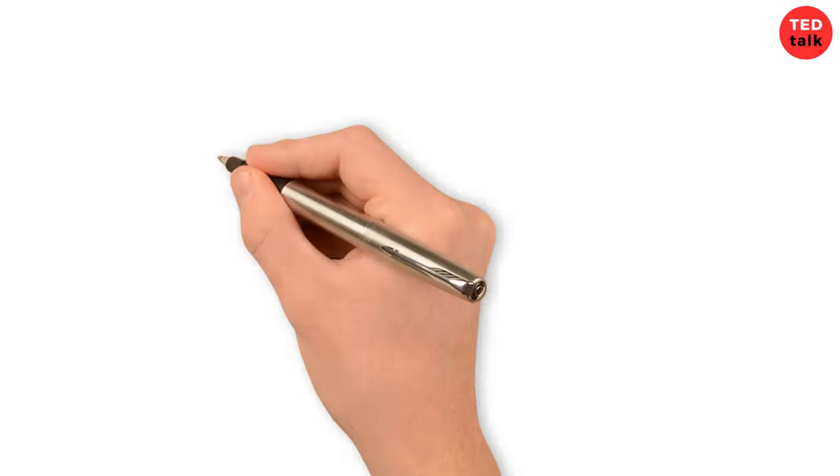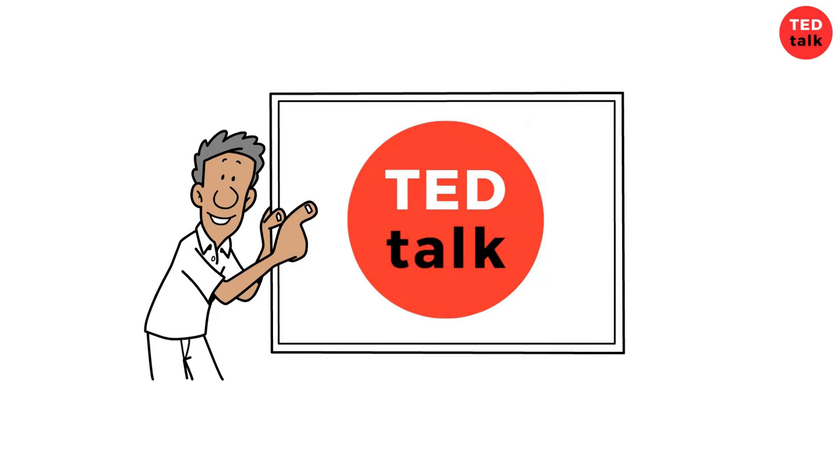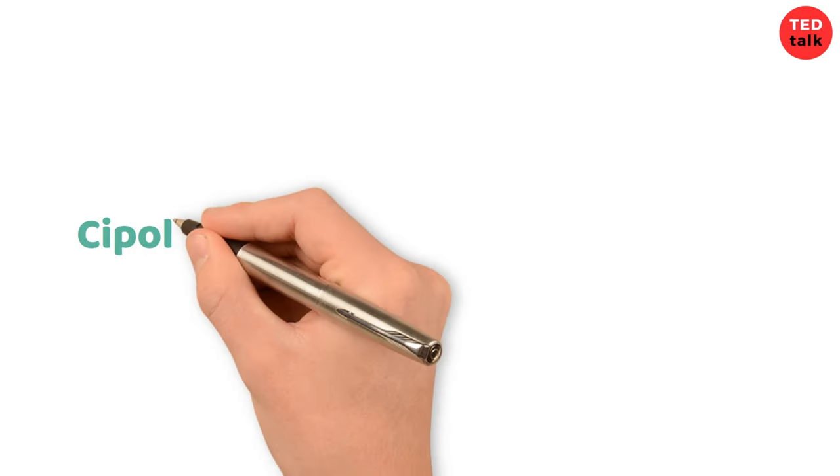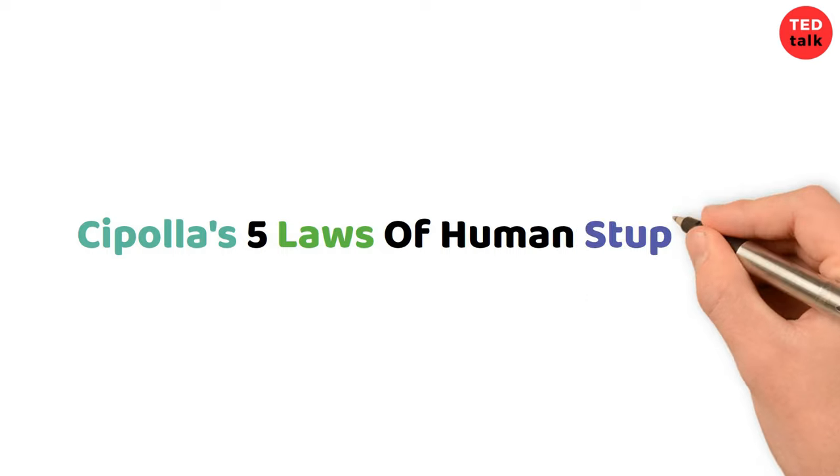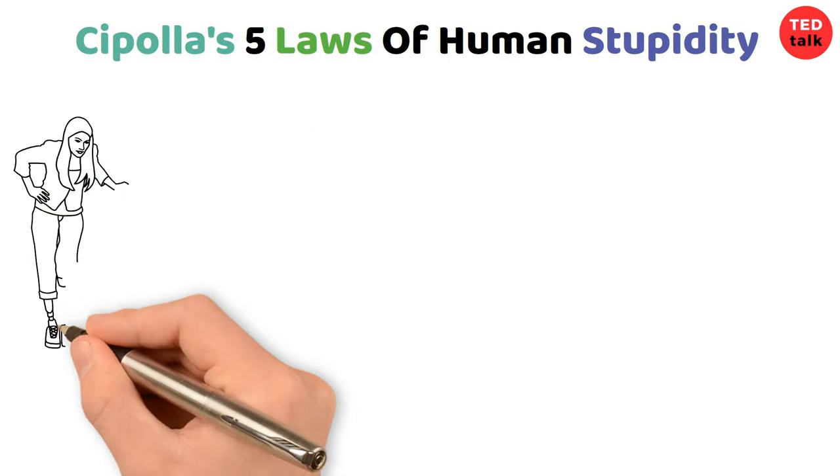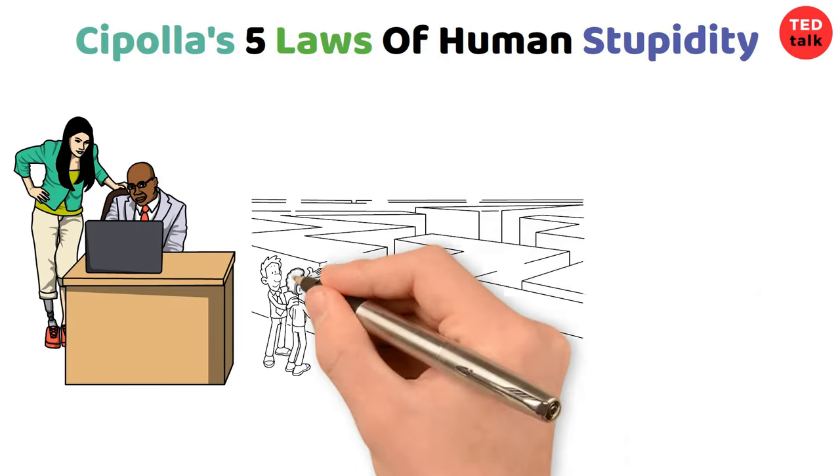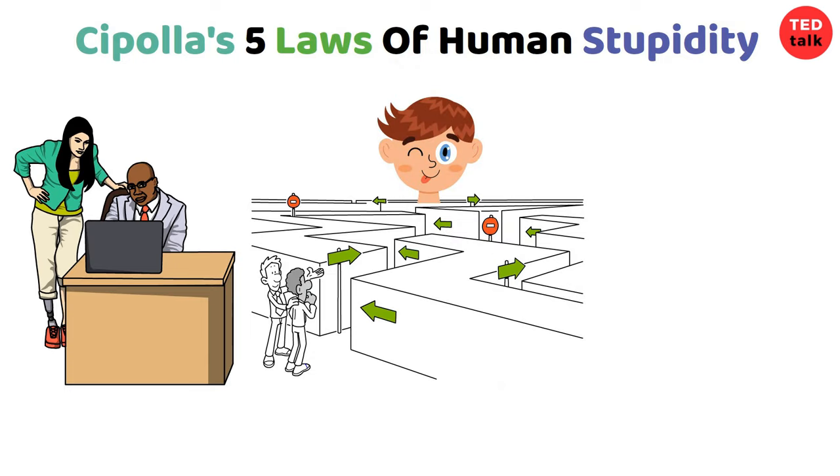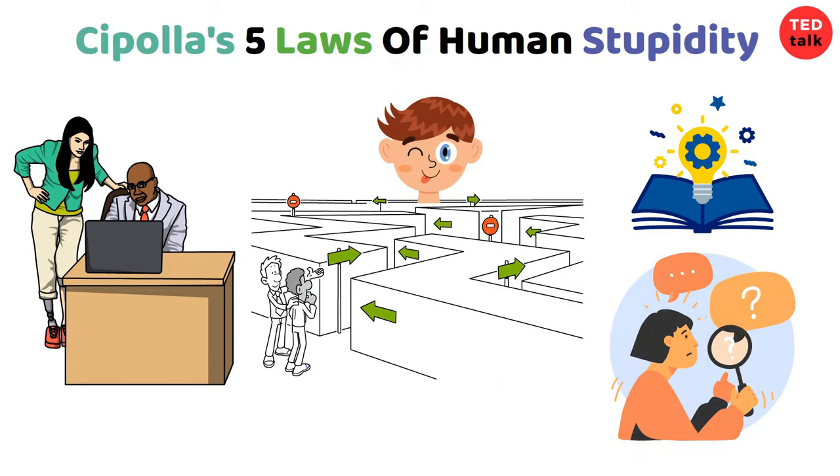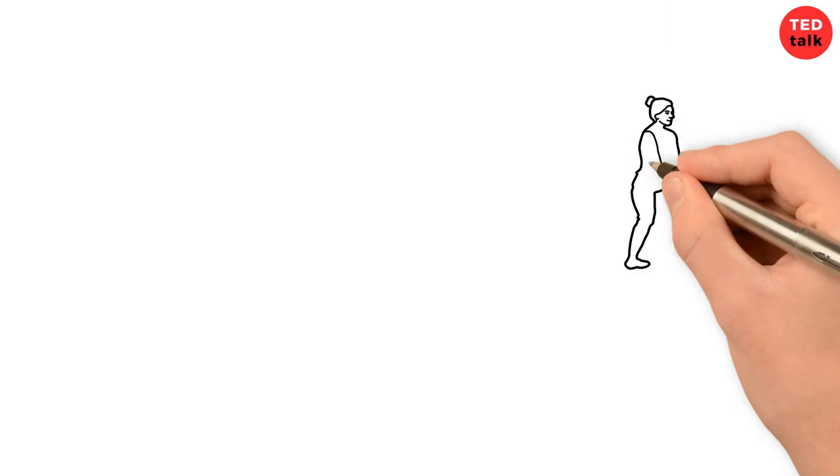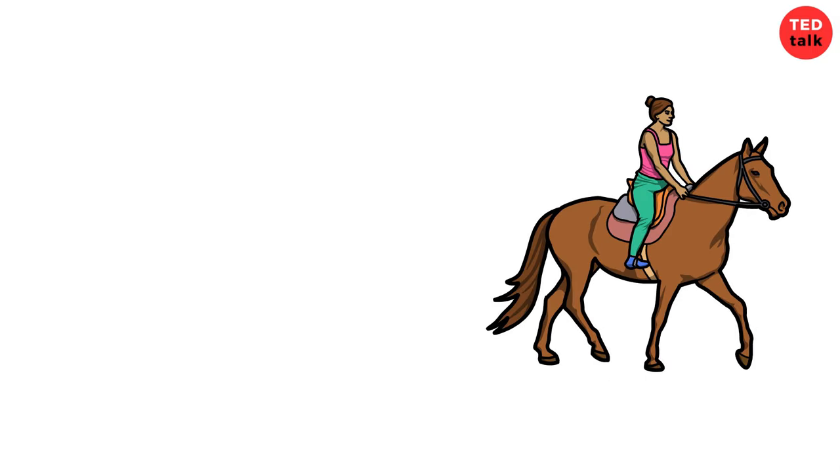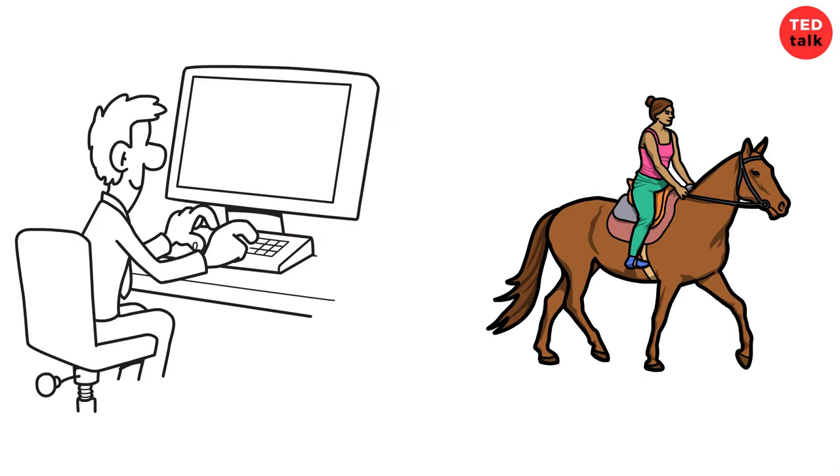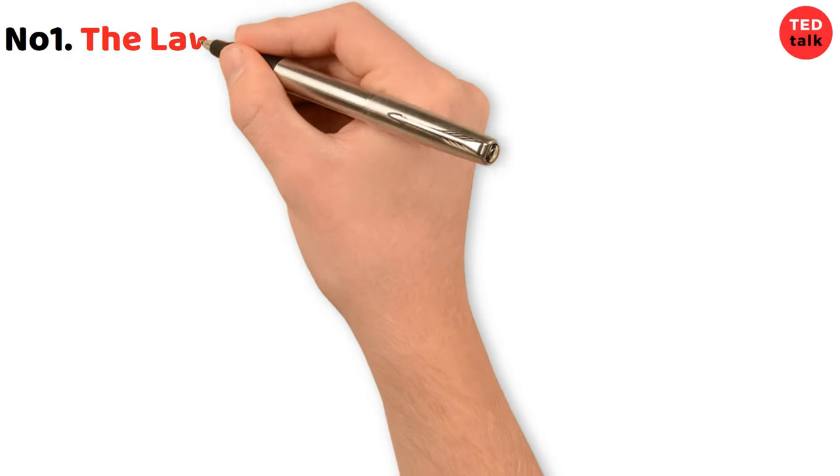Hey everyone, welcome to TED Talk. Today we will learn about Cipolla's five laws of human stupidity. With Cipolla as our guide, we'll navigate through the maze of silliness, uncovering nuggets of wisdom hidden amidst the chaos. So get ready for a wild ride as we explore the quirks and curiosities of human stupidity like never before.